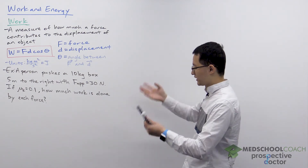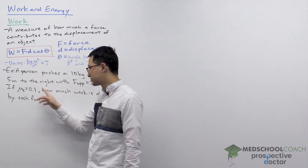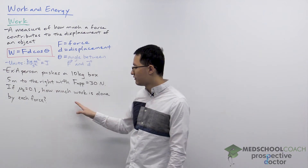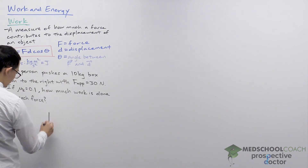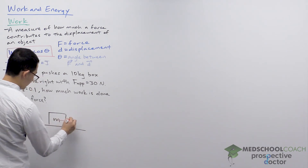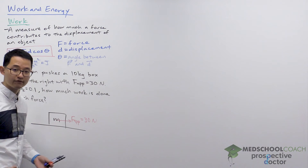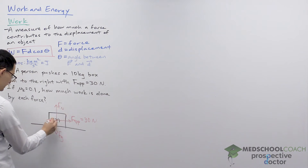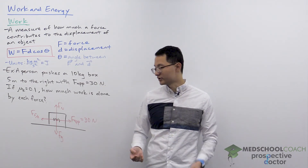Now let's look at a practice problem. A person pushes a 10 kilogram box five meters to the right with an applied force of 30 newtons. The coefficient of kinetic friction is 0.1, and we want to know how much work is done by each force. We can start by drawing out the situation: the box of mass M is pushed to the right with 30 newtons, and in addition we have the weight, the normal force, and kinetic friction. We'll calculate the work done by each force one at a time.